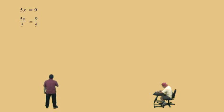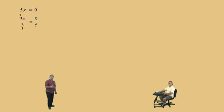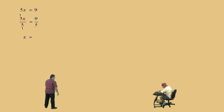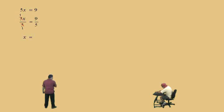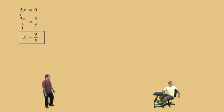Divide by 5. That's right. Why are we dividing by 5? Because 5 over 5 reduces to 1 over 1, and that will give us our 1x. Remember, that's our goal. Since we divided the left side by 5, we had to divide the right side by 5 as well. So what's left on the right-hand side, Charlie? 9 over 5. Very nice there, Charlie.